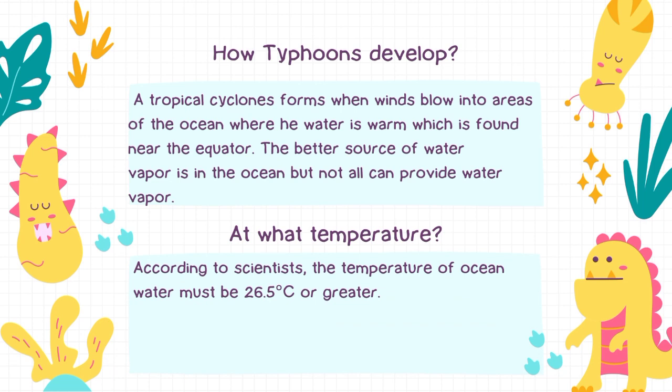How typhoons develop: a tropical cyclone forms when winds blow into areas of the ocean where the water is warm, which is found near the equator. The ocean is the best source of water vapor, but not all ocean areas can provide it. According to scientists, the temperature of ocean water must be 26.5 degrees Celsius or greater.